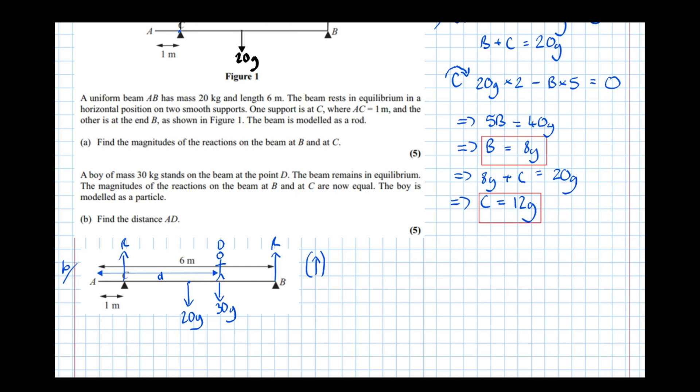So upwards the forces are 2R, and take all the forces downwards: take 20G, take 30G, equals zero because it's in equilibrium. Right, so that says that 2R equals 50G, which means that R equals 25G.